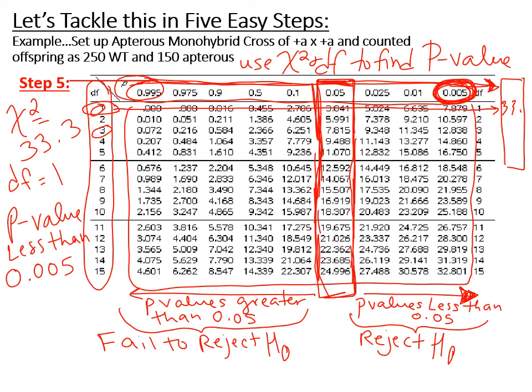P-values greater than 0.05 mean you fail to reject the null hypothesis. When we reject the null hypothesis, that means we reject the idea that there is no significant difference between expected and observed values — meaning there likely was a difference. Looking at our numbers, we didn't get 300 and 100; we got quite a bit different from that. That's how you analyze your P-values in the final result.